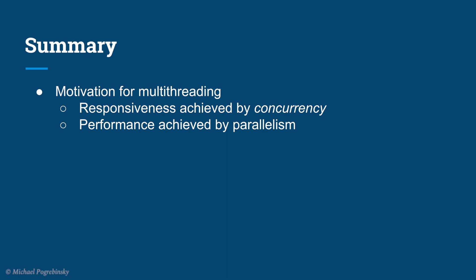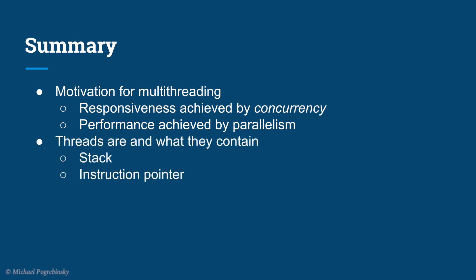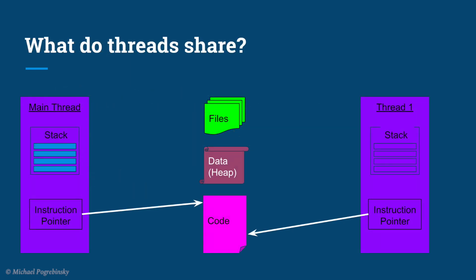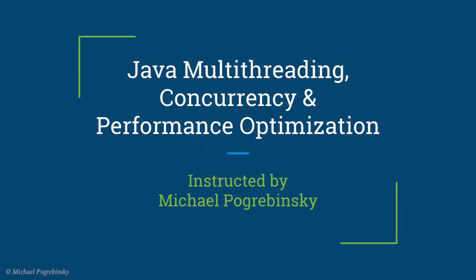Let's quickly summarize what we learned in this lecture. We got motivation for why we want multiple threads — the importance of responsiveness achieved through concurrency, and high performance achieved through parallel execution. We then talked about what threads are and what they contain, such as the stack and the instruction pointer, and also what threads share in a process, such as the files, the heap, and the code. See you in the next lecture.